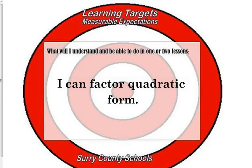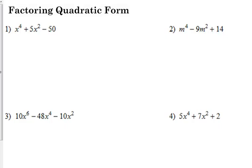Factoring quadratic form. For example, if we had x to the fourth plus 5x squared minus 50, we're used to trying to see quadratic functions like x squared plus 5x minus 50. What happened to the x to the fourth and x squared instead of x squared and x? It's the exact same premise.